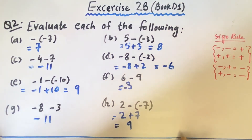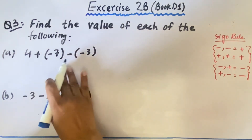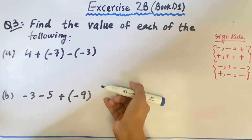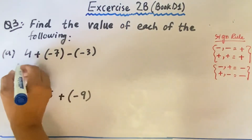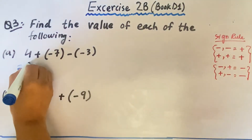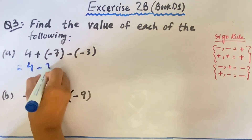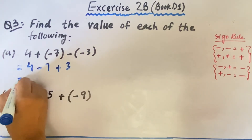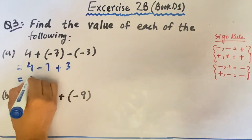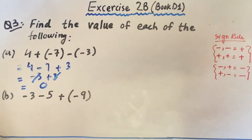Now let's move to question number 3. In question number 3, we are asked to find the value of each of the following, and the same rule will be followed. But in question number 3, each question has three numbers along with their positive and negative signs. We open the bracket first with the help of the sign rule: 4 will remain the same, plus minus minus 7, minus minus plus 3. Then in the second step we solve it: plus minus equals minus 3 and plus 3 — both cancel — and the final answer will be 0.